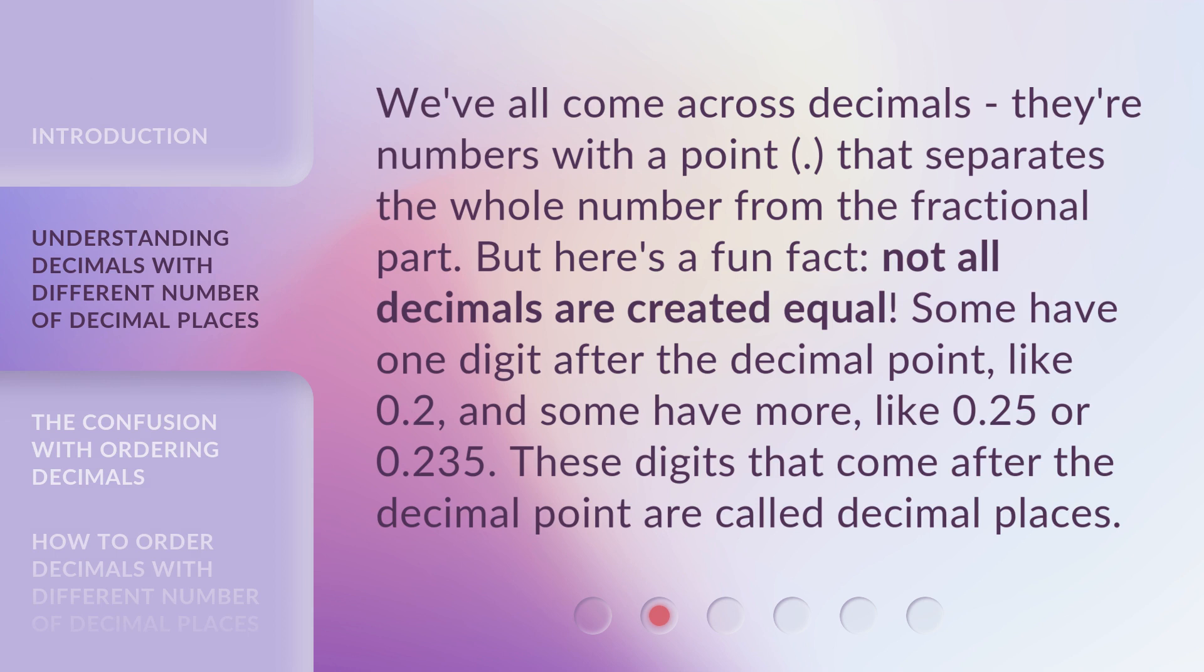We've all come across decimals. They're numbers with a point that separates the whole number from the fractional part. But here's a fun fact. Not all decimals are created equal. Some have one digit after the decimal point, like 0.2, and some have more, like 0.25 or 0.235. These digits that come after the decimal point are called decimal places.